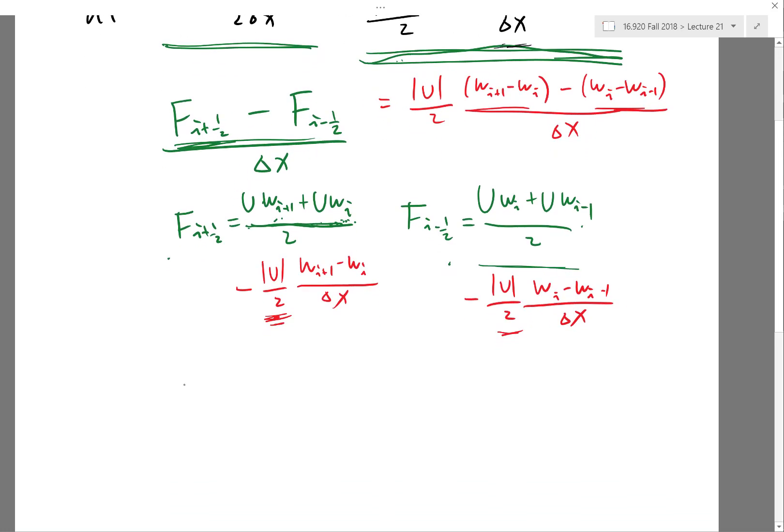So in the nonlinear case, we can set fᵢ₊₁/₂ to the flux function of wᵢ plus flux function of wᵢ₊₁ divided by 2, minus the absolute value of df/dw evaluated at the interface divided by 2 times the same numerical dissipation. That's one approximate Riemann solver.